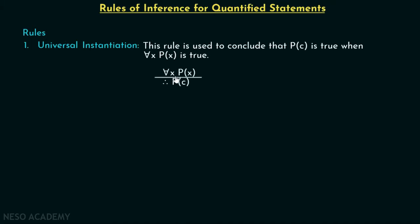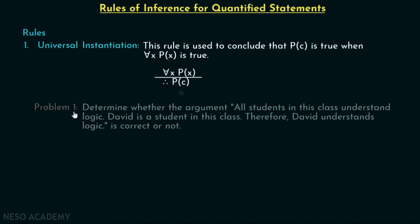This means if for all x, P(x) is true, then P(c) has to be true. Now let's discuss one problem related to universal instantiation in order to understand this in a better way, and also we will see the application of universal instantiation. Here is problem number one.